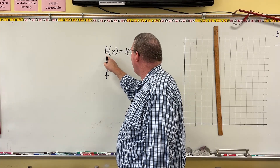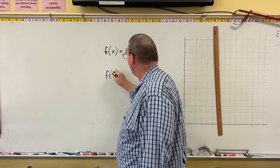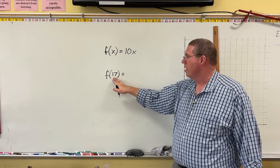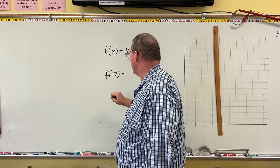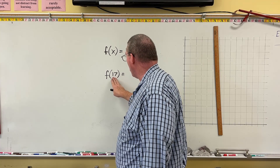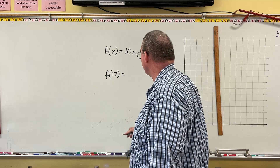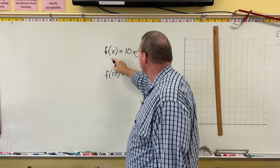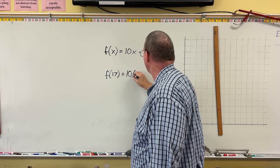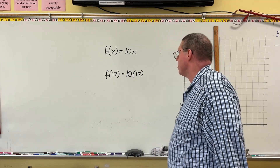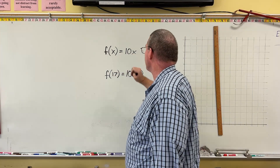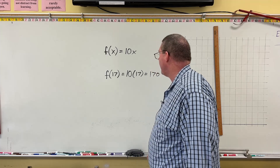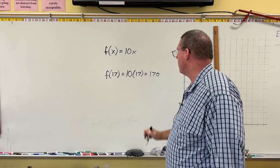What we would do is write the output letter F, but instead of writing the input variable X, we place the input number directly inside the parentheses. So we write F(17). To calculate it, we rewrite 10 but replace X with 17 in parentheses: F(x) = 10x, so F(17) = 10 × 17 = $170. Input is 17, output is $170.